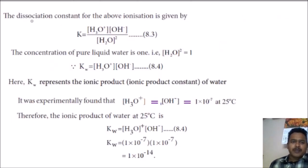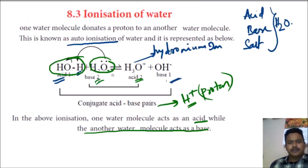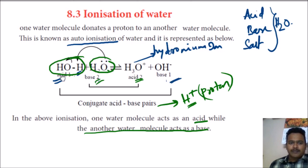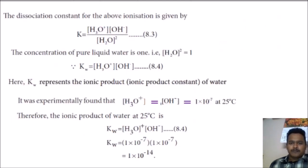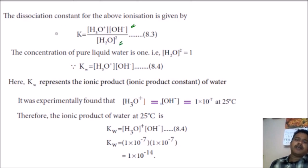The dissociation constant for the above ionization is given by the equilibrium expression: products' concentrations divided by reactants' concentration. So K equals the concentration of H3O+ times the concentration of OH− divided by the concentration of H2O times the concentration of H2O. This is like an equilibrium constant, but here we give it the name dissociation constant.